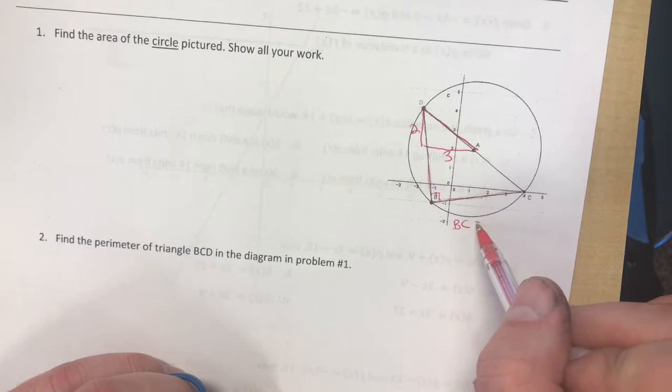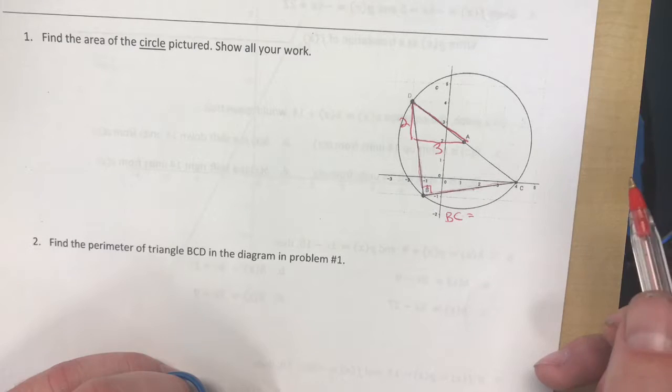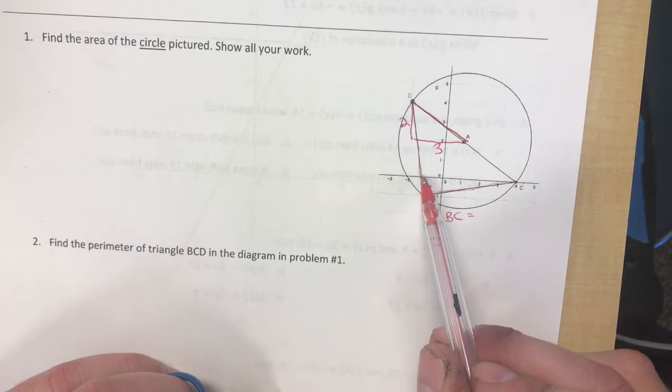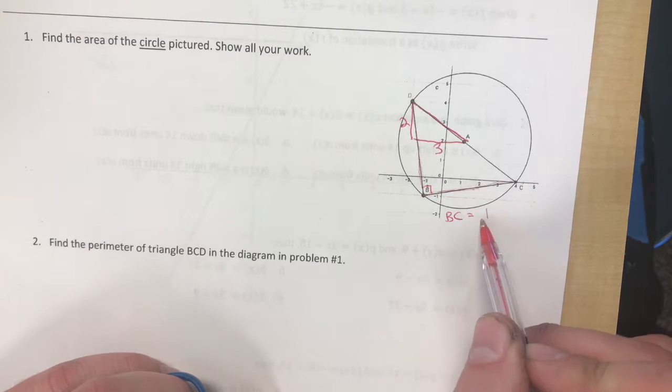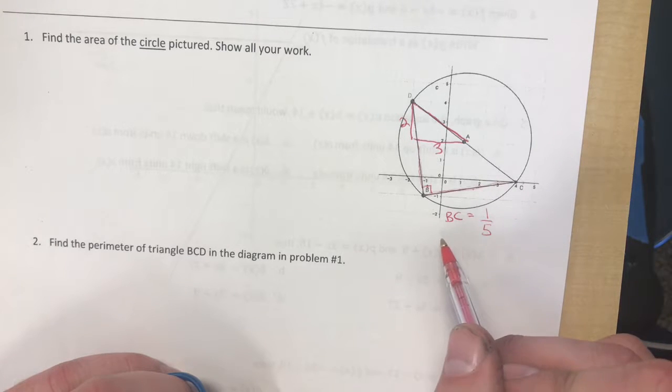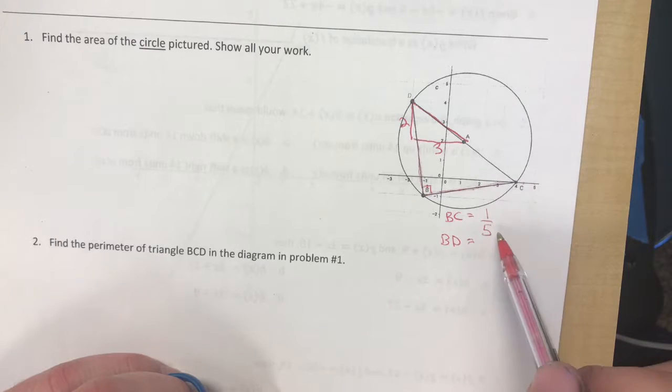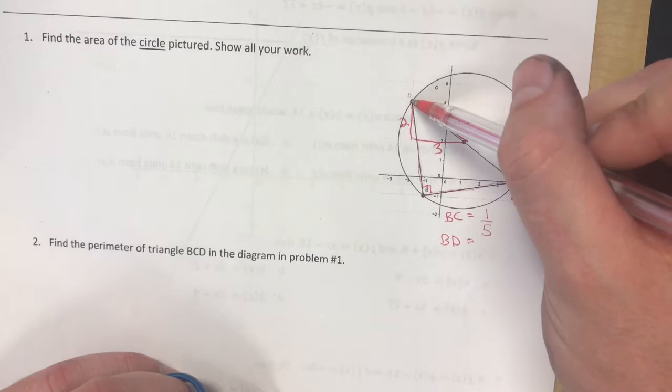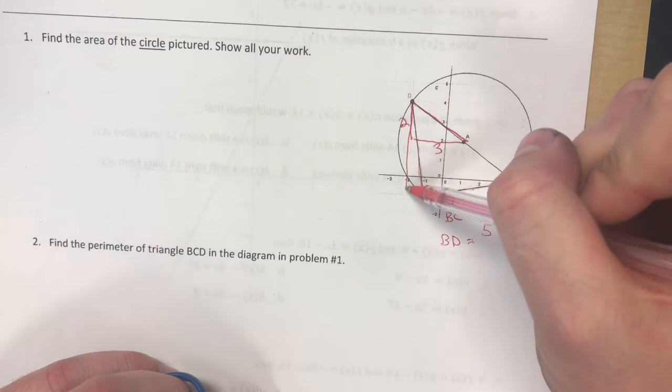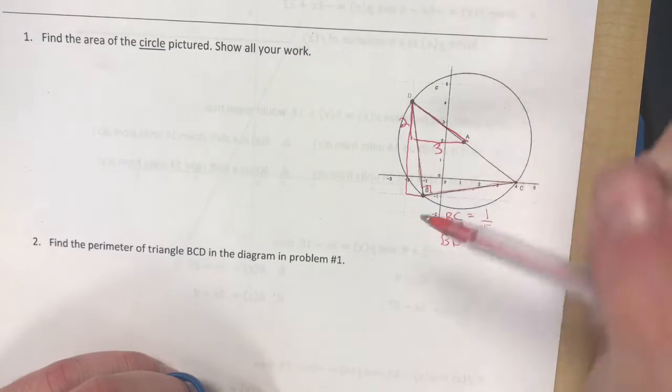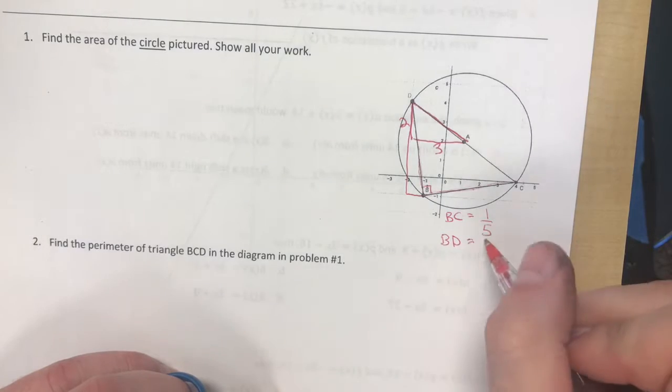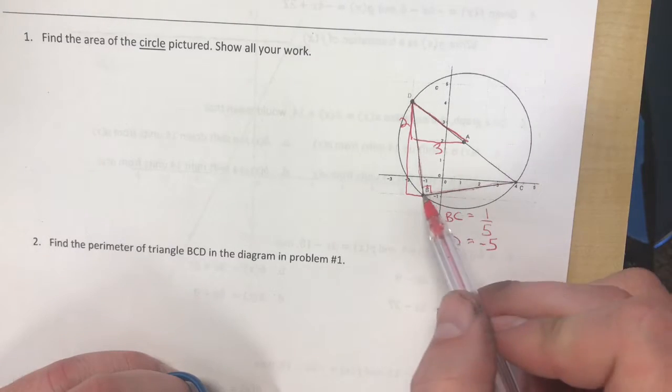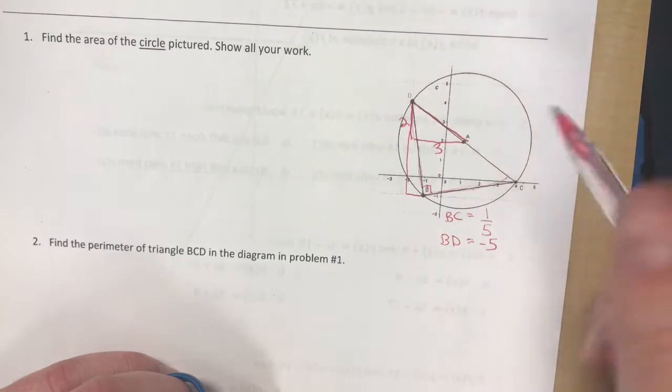So the slope of BC is 1 up and 5 over. So I know that if the slope of BD is negative 5, then I know I can use it. So let's look here, this would be down 5 and 1 over. So since it is, I could use this as the base and this is the height. Another way to look at this problem was if I was using this as the base.